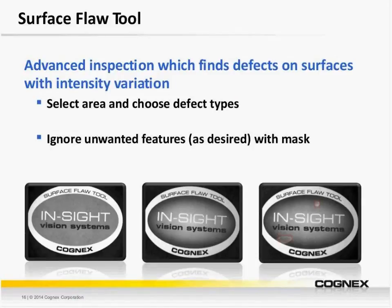Next, we have our Surface Flaw tool. This is capable of finding defects on features that experience a gradient variation, which might be a reality when we have light intensity variation. The way the tool works is we select an area and choose the types of defects we're looking for, and it can also use a masking tool to hide complex features. As you can see from the images below, on the left we have our golden image — a nice, even contrast label. In the middle image, we have a slight gradient created by light intensity variation that the tool is capable of accounting for. And on the right, we've been able to detect the bubbles on the label.